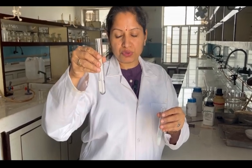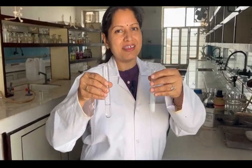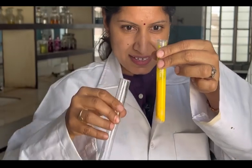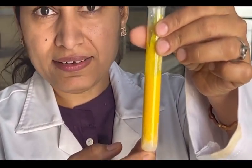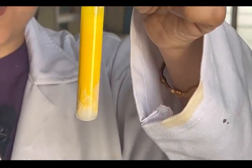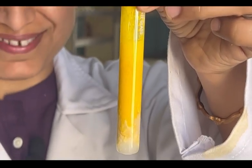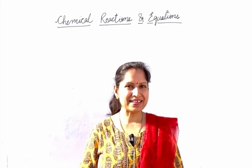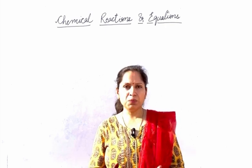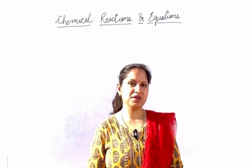In this test tube I have lead nitrate aqueous solution and here I have aqueous potassium iodide. Adding potassium iodide to lead nitrate, we see a beautiful yellow precipitate of lead iodide being formed, and aqueous potassium nitrate is also formed. This yellow precipitate is of lead iodide — another example of a double displacement reaction. I hope you enjoyed the experiment and were able to see the white precipitate of barium sulfate and the yellow precipitate of lead iodide.